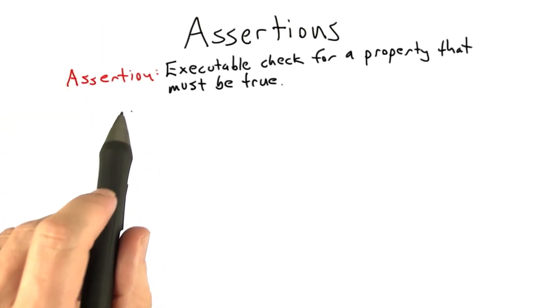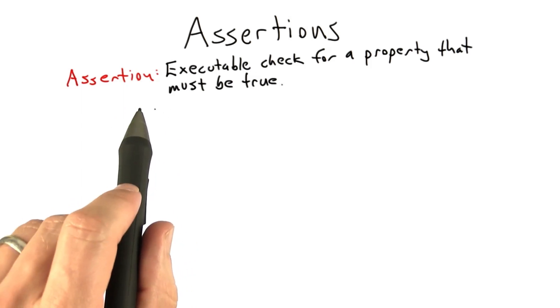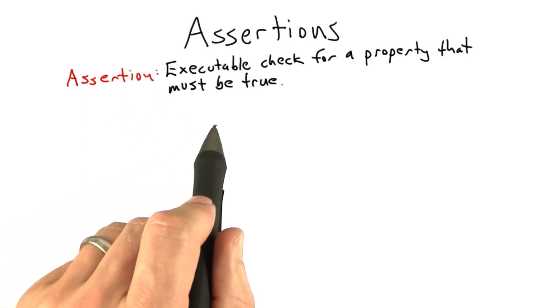So assertions are an important enough topic that we're going to want to cover them separately. So an assertion is an executable check for a property that must be true of your code.